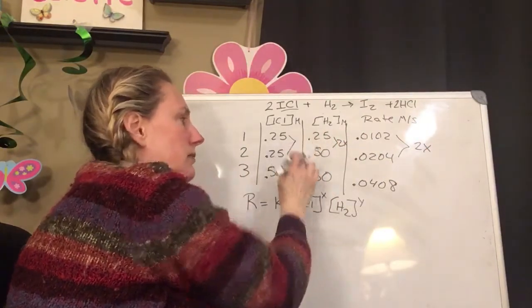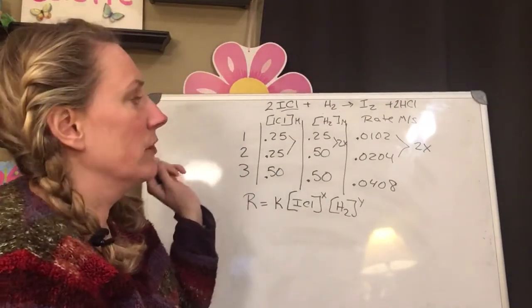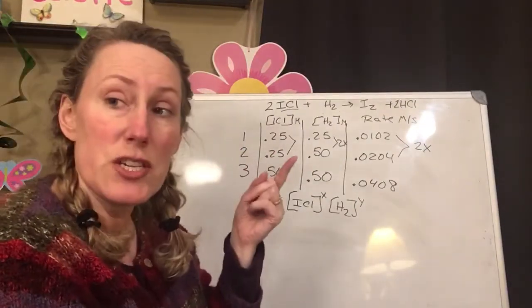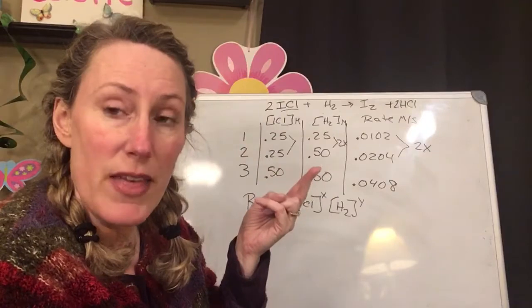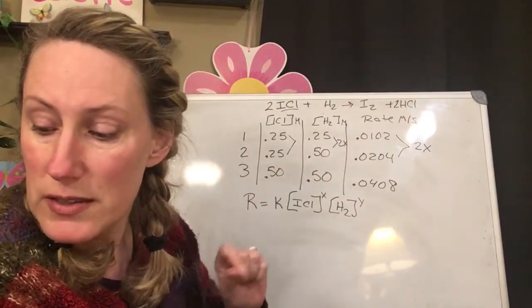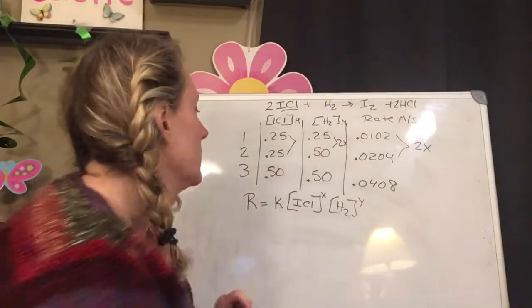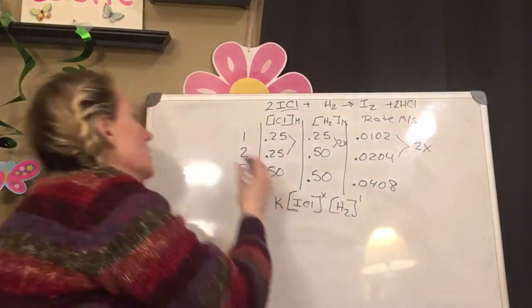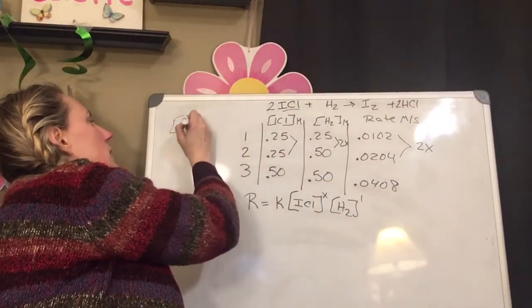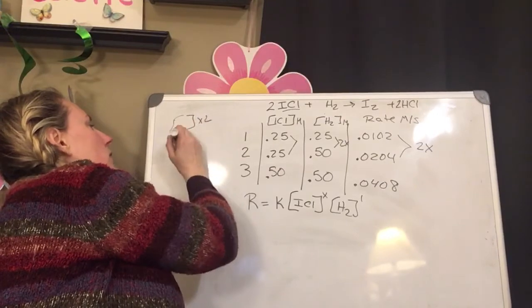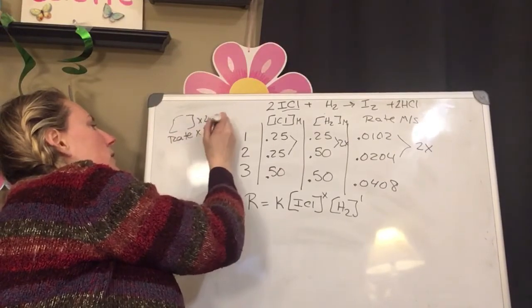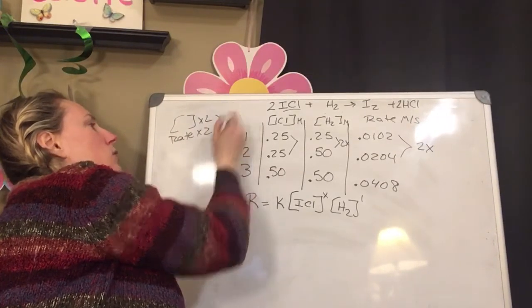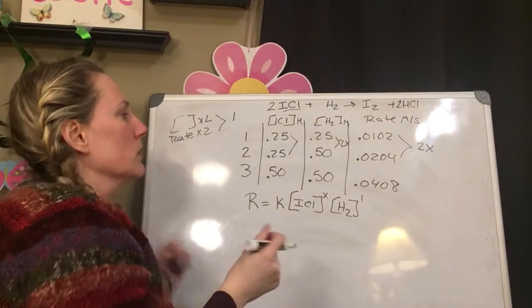So this doesn't change at all. So if your concentration doubles and your rate doubles, that makes your exponent to be a 1. So that means this exponent here is 1. When my concentration doubles and rate doubles, your exponent is a 1.